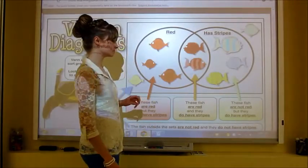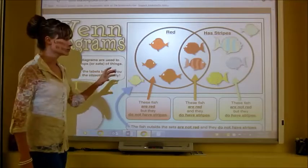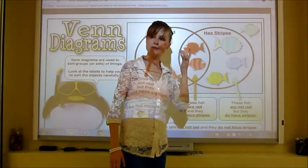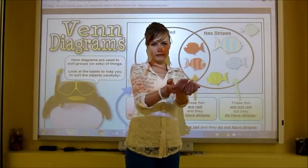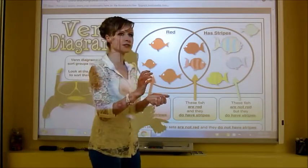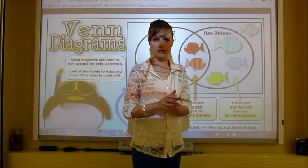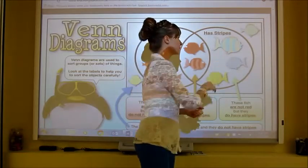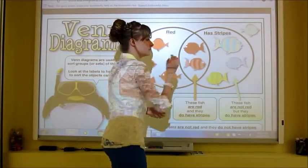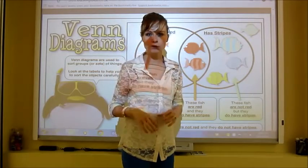Here's an example. If we label this circle 'red fish' and this circle 'striped fish,' and we had a group of fish to sort, then all fish that are red with no stripes go here. All fish that have stripes but no red go here. All fish that have both stripes and red go in the middle because they connect and are inside both circles.